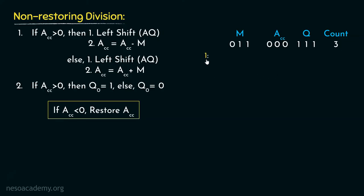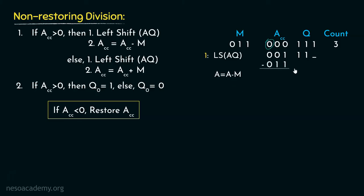During the first iteration, we first check whether the content of the accumulator is positive or not. The MSB of the accumulator is 0, which signifies positive. When the accumulator is positive, we are going to perform the left shift first, then perform the subtraction. After the left shift, the AQ content shifts accordingly and Q0 is yet to be determined. Since it is positive, we perform the subtraction using 2's complement: 011 is changed into its 2's complement form, which becomes 101.